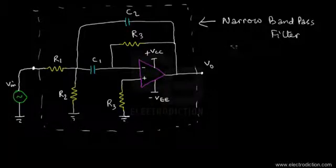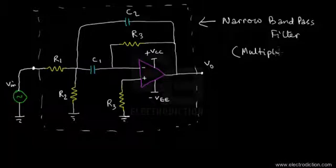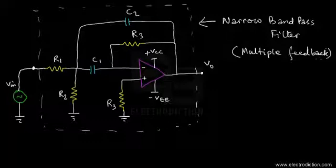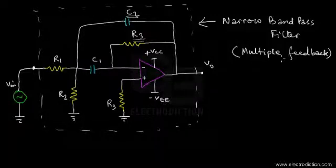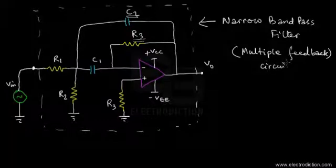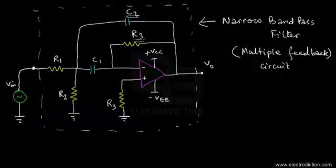This circuit employs what we call the multiple feedback technique. Here we have multiple feedbacks provided. Where are the multiple feedbacks? We have a feedback resistor R3 right over here, and there's another feedback capacitor C2. So we have two feedback paths — that's why we're calling the circuit a multiple feedback circuit.